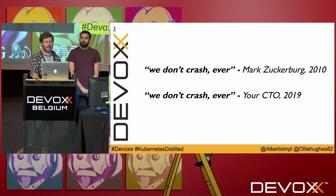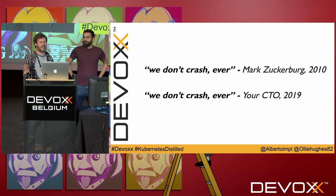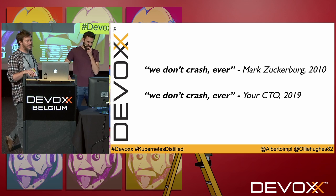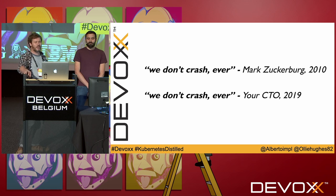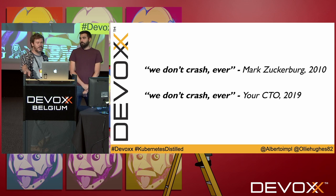Mark Zuckerberg allegedly claimed 'we don't crash ever' — at least that's what Jesse Eisenberg said when he portrayed Zuckerberg in the 2010 film The Social Network. The statement is quite ironic now given Facebook's high-profile outages. The point is that consumers have such high expectations about availability and performance — the minute there's a sniff of downtime your users will be tweeting about it and complaining. Downtime and slow response is becoming much more costly and embarrassing for organizations than it ever was in the past.